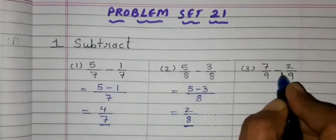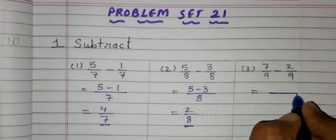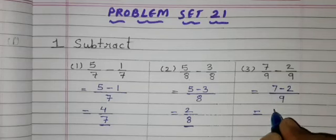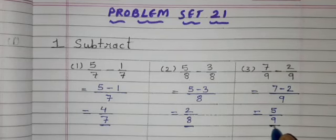Third one: 7 upon 9 minus 2 upon 9. Common denominator is 9 and numerators are 7 minus 2. 7 minus 2 is 5, so answer is 5 upon 9. Fourth one: 8 upon 11 minus 5 upon 11. Common denominator is 11, and 8 minus 5 is equal to 3. So, 3 upon 11 is the answer. Fifth one: 9 upon 13 minus 4 upon 13. Common denominator is 13 and in numerator, write 9 minus 4. 9 minus 4 is 5, so 5 upon 13 is the answer.